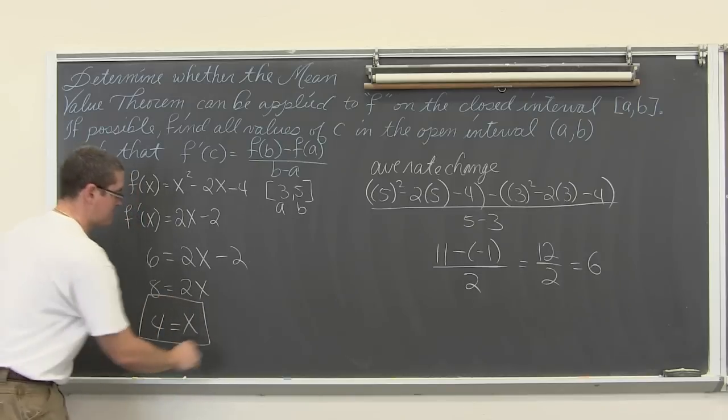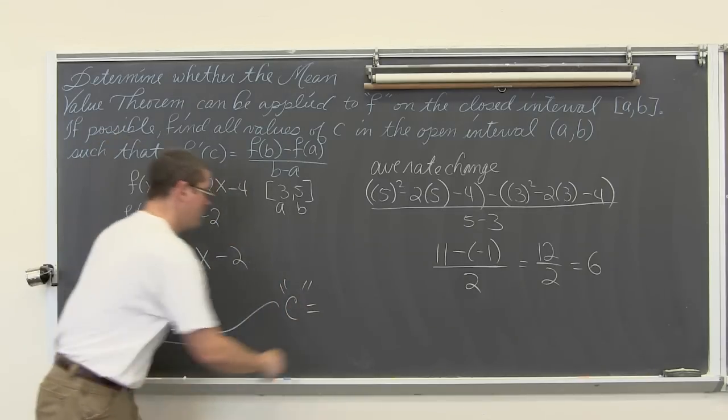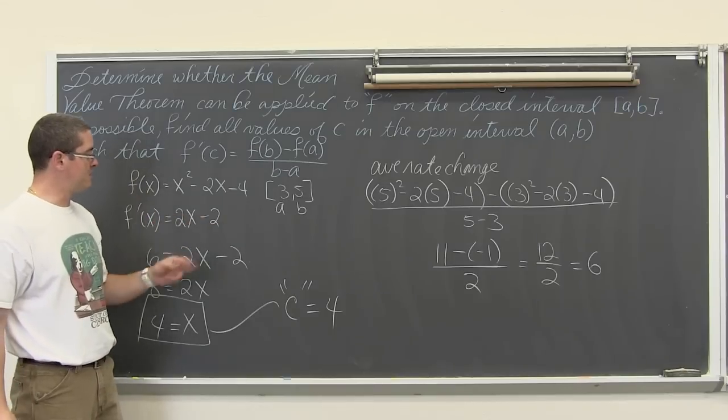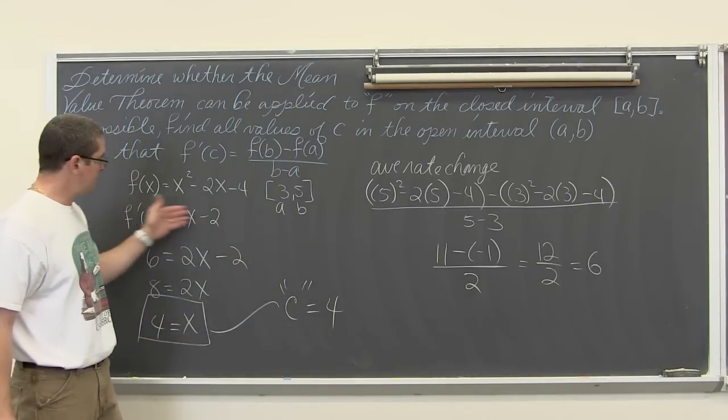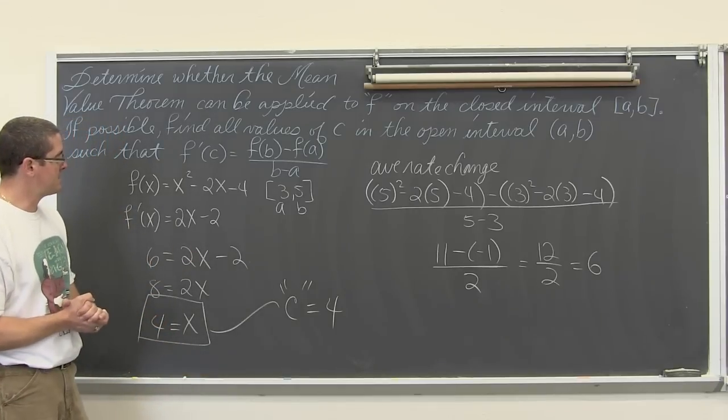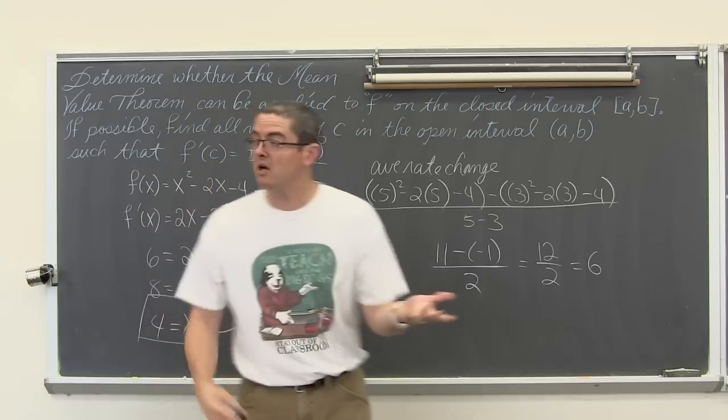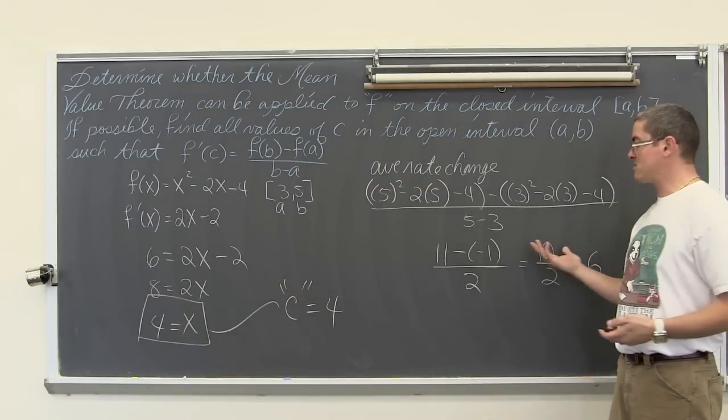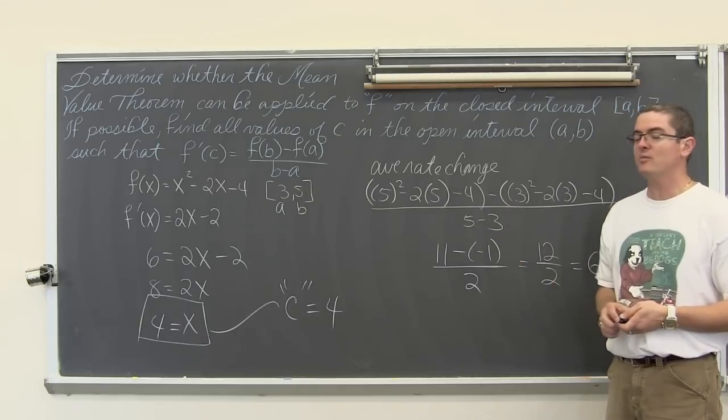So this actually becomes our c value, where if I take the 4 and I plug it into the derivative, 4(2) is 8 - 2 is equal to 6, and that instantaneous rate of change, or the slope of the tangent line, there is a c value that makes that derivative equal to the average rate of change. And that is the mean value theorem. The only thing that really makes these questions a bit more difficult is if you have a function that is harder to find the derivative of than my basic polynomial here.